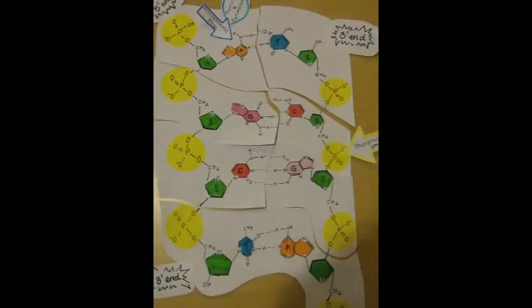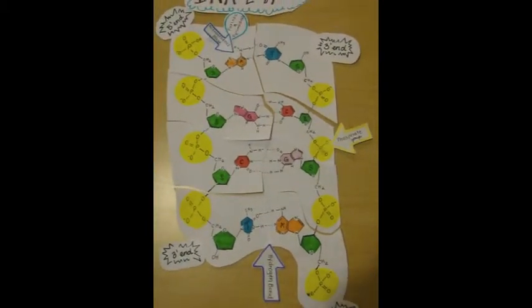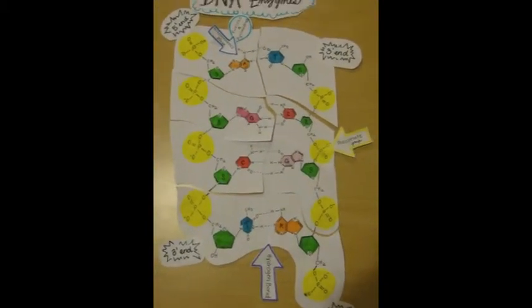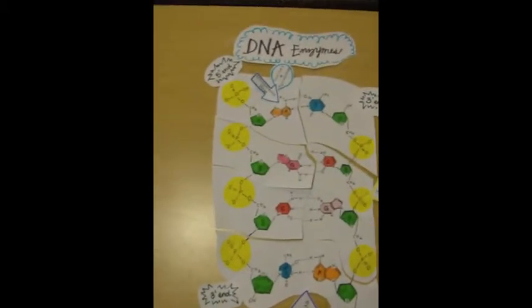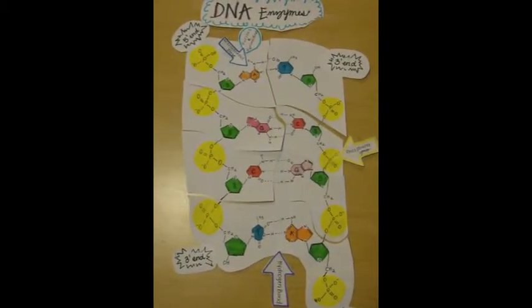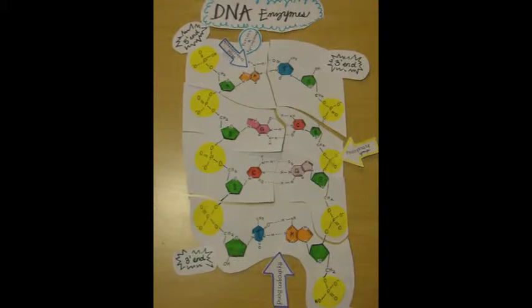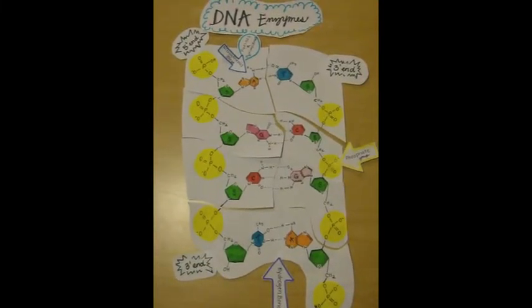The nitrogenous bases consist of purines and pyrimidines. They are bonded together by hydrogen bonds. Purines are larger bases with a six-membered ring of carbon and nitrogen atoms fused to a five-membered ring of carbon.